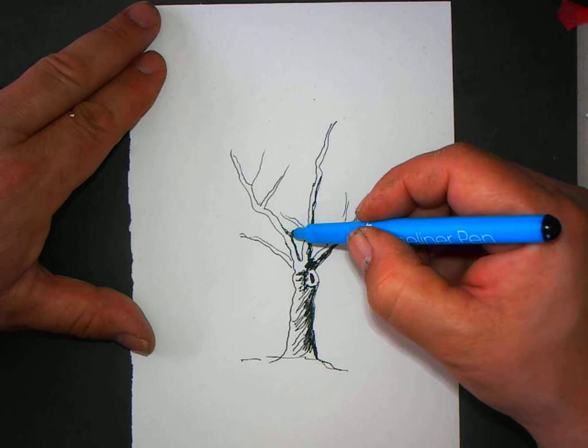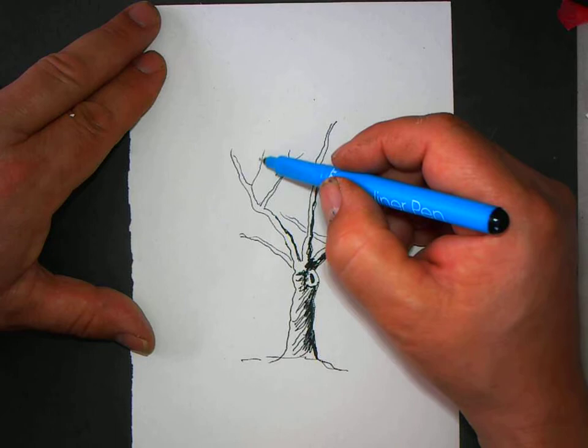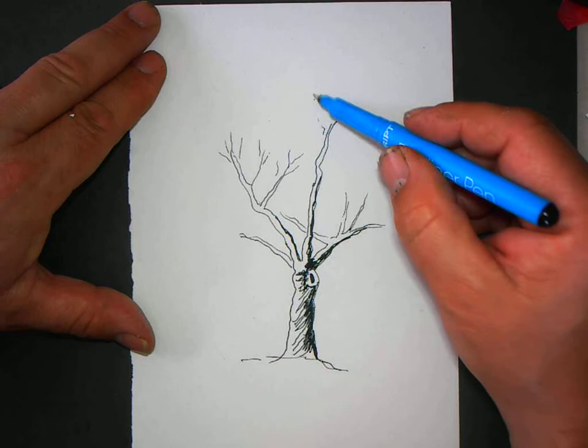Now into these branches, I'm going to have smaller branches, twigs. They're going to be like wispy ones, so the pen is hardly touching the paper.